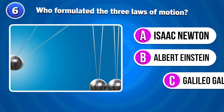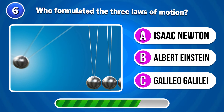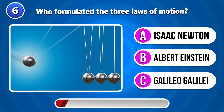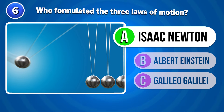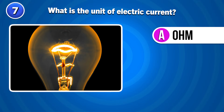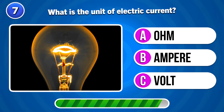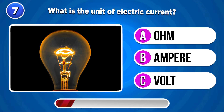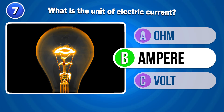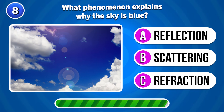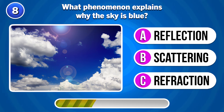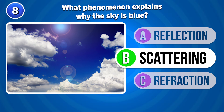Who formulated the three laws of motion? Isaac Newton. What is the unit of electric current? Ampere. What phenomenon explains why the sky is blue? Scattering.